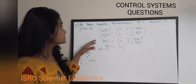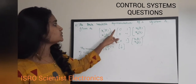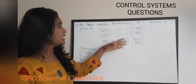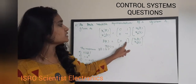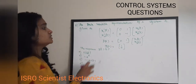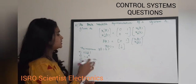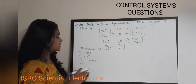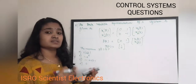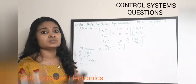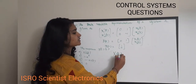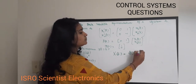The third question involves state variable representation: ẋ(t) = [0, 1; 0, -1]·x(t), and y(t) = [0, 1]·x(t), with initial condition x(0) = [1, 0]ᵀ. Find the value of y(t). Options are: A) sin(t), B) 1 - e^t, C) 1 - cos(t), D) 0. The general solution uses the state transition matrix: x(t) = φ(t)·x(0).